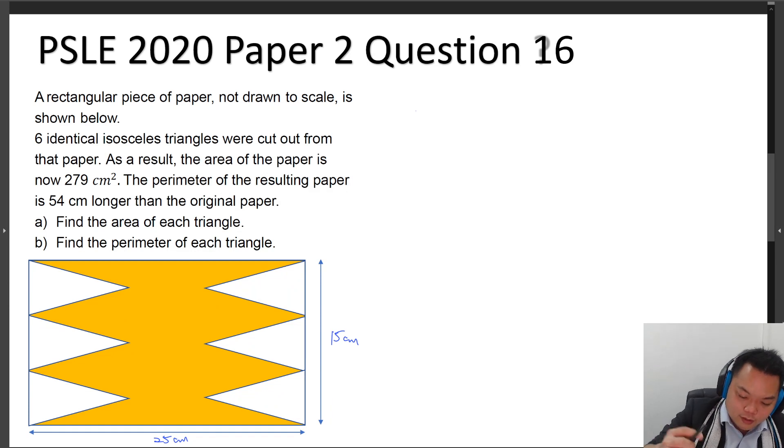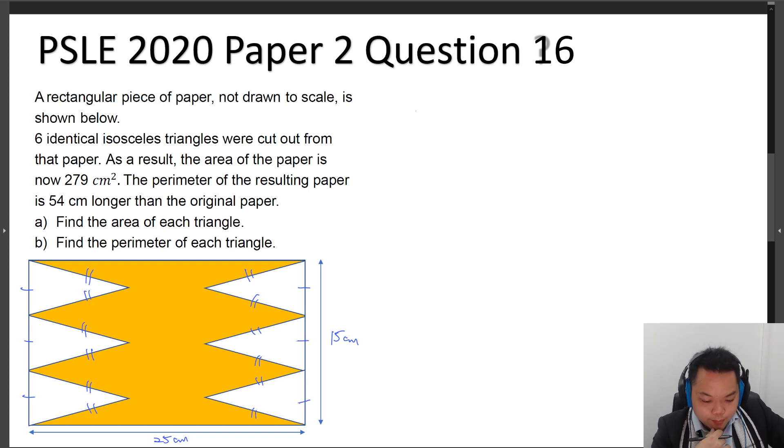So let's begin on this. A rectangular piece of paper, not drawn to scale, is shown below. Six identical isosceles triangles were cut out from that paper. If they are identical isosceles triangles, label out everything first. The perimeter of the resulting paper is 54 cm longer than the original paper. Find the area of each triangle and find the perimeter of each triangle.